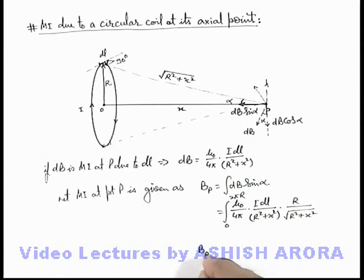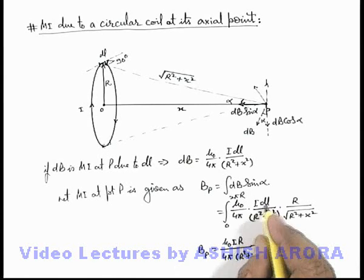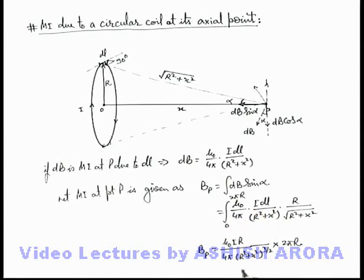So magnetic induction at point p we can write as mu not i r by 4 pi r square plus x square to power 3 by 2, multiplied by integration of dl from zero to 2 pi r, which we can write as 2 pi r.